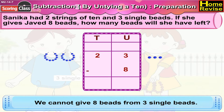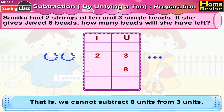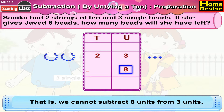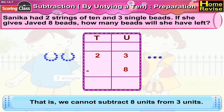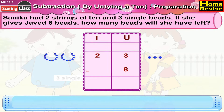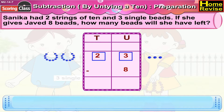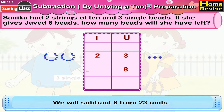We cannot give eight beads from three single beads. That is, we cannot subtract eight from three units. Under tens you have two, under units you have three. Now in order to find out the answer, we will subtract eight from twenty-three.